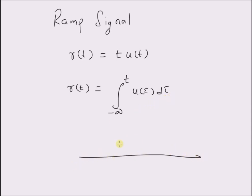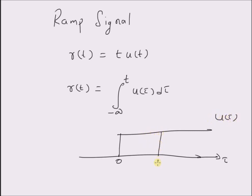That is, if this is the unit step signal, with tau equal to zero to infinity — this is the tau axis and this is u of tau — then the ramp signal at any time t is given by the area of this rectangle. Clearly, the height of this rectangle is equal to 1, since the value of the unit step signal is equal to 1 for tau greater than or equal to 0.